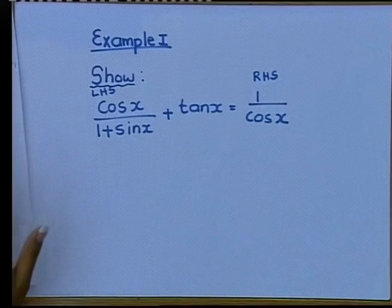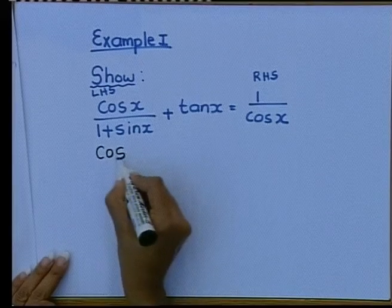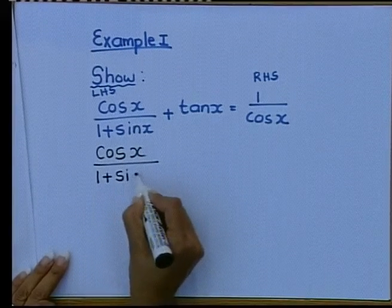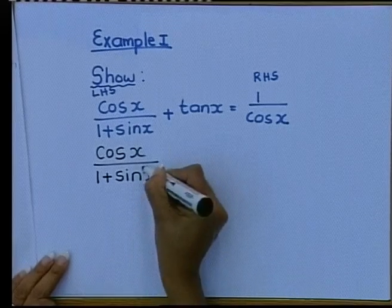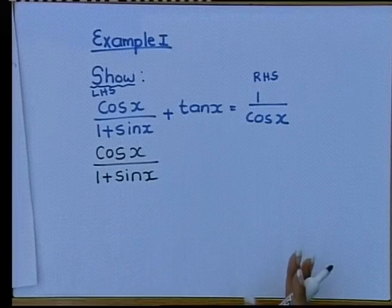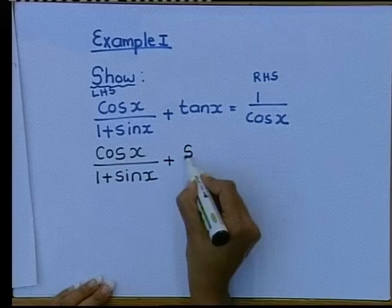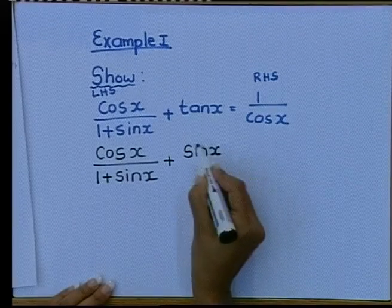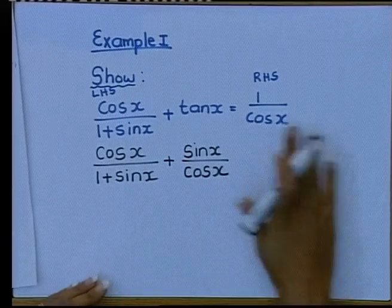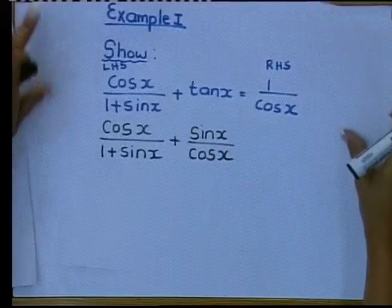So, we are going to change the tan x to sin over cos. So, this is cos x. Leave it like that. Leave the 1 plus sin x. Remember, there is no square here. So, it is not an identity. 1 plus sin x remains 1 plus sin x. And we're going to change the tan to sin x over cos x. And we do not write our right hand side down because we haven't proven it yet.